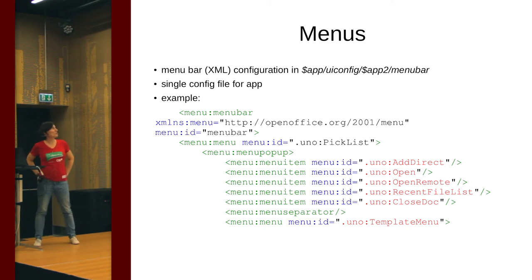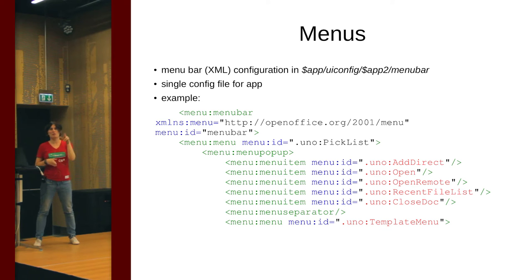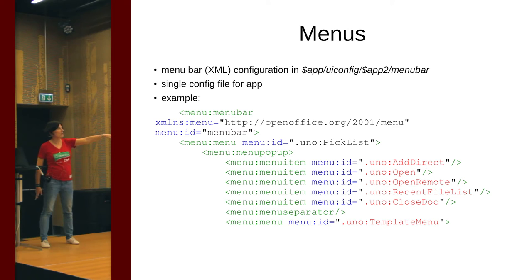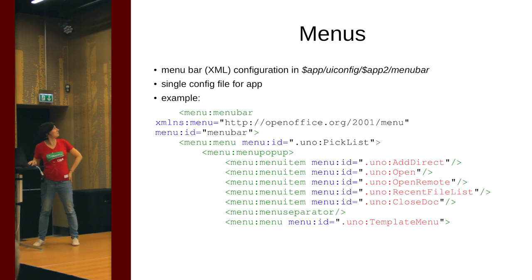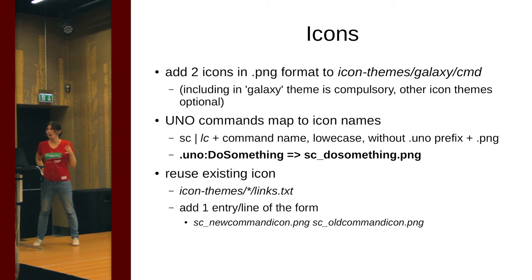Menus are perhaps the most straightforward. There's only one XML file with the menu configuration for the application, and it looks like this — it's the same file for menus across all apps. The UNO commands are highlighted in red. Every toolbar button, every sidebar button, and some menu entries can also have associated icons.